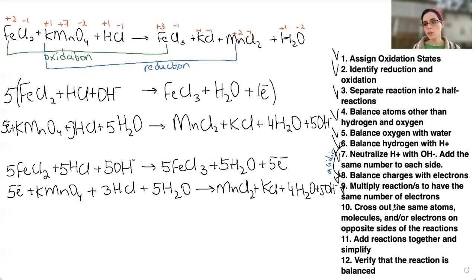Cross out the same atoms, molecules, and or electrons on opposite sides of the reactions. So what does it mean opposite sides? Well, here we have reactant side. And here we have reactant sides. It's the same side. But reactants here, for example, and products here, those are opposite sides. So if you see the same of something on both, on those opposite sides, you can cross that out. So that's why we had to multiply everything by five. Because now we have five electrons here, five electrons there. We can cross them out.